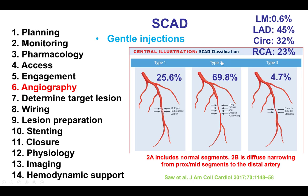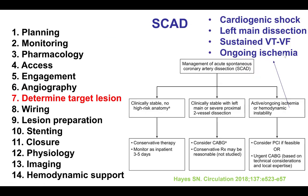This is a type 2 SCAD with a long diffuse and smooth narrowing. This is actually a type 2B, as the narrowing goes all the way from the beginning of the PDA to the distal portion of the artery. Interestingly, the right coronary artery is the least likely to cause a spontaneous coronary artery dissection, but this was the culprit in our patient.